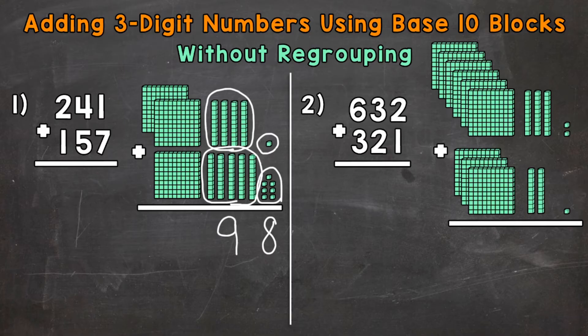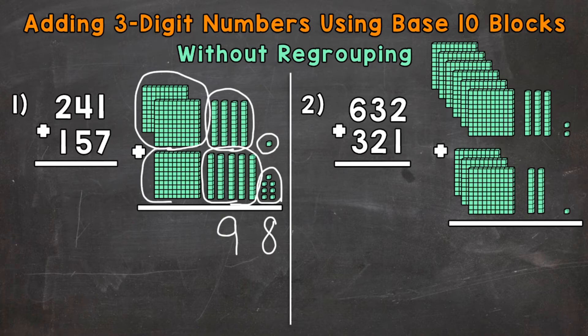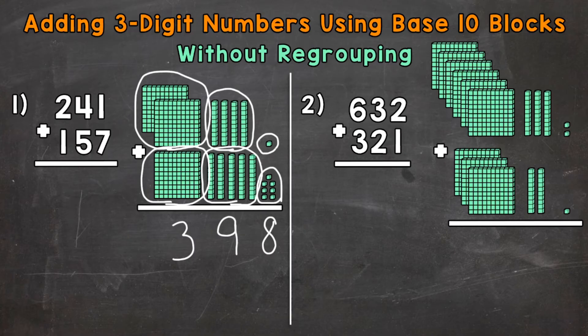Lastly, we have to add the hundreds place. In 241, we have a 2 in the hundreds place — that means 2 groups of 100 with a value of 200. In 157, we have a 1 in the hundreds place, meaning 1 group of 100 with a value of 100. So 2 groups of 100 plus 1 group of 100 equals 3 groups of 100, giving us a 3 in the hundreds place with a value of 300. Our final answer is 398.